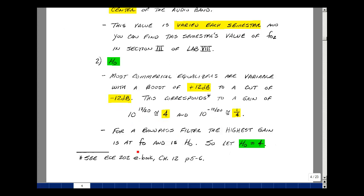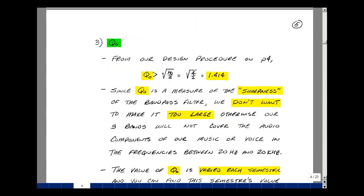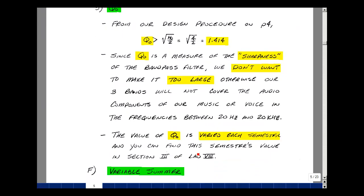The bandpass filter has its biggest gain at F naught, and that's the value of H naught. So let's let that equal four. The one quarter we'll get from the potentiometers in our summing circuit. Our next task is to pick the value of Q naught. For a design procedure, Q naught needs to be greater than H naught over two, and we now know that our design H naught is four, so Q naught needs to be greater than 1.414. As I said in ECE202, Q naught is a measure of sharpness of a bandpass filter. We don't want to pick this too large, otherwise we'll have just a small band of frequencies instead of a wide band of frequencies between 20 hertz and 20 kilohertz. Again, I vary the value of Q naught each semester.